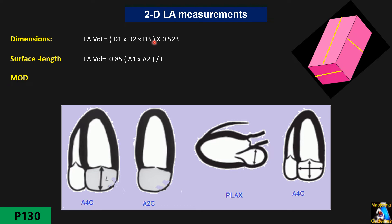The machine calculates the volume for us using the appropriate equation, or we can calculate it ourselves. For the surface-length technique, we go to apical four and two-chamber views and trace the left atrium at end-systole in both views, then measure the LA length. The machine calculates the volume using this equation. The third technique is the method of disks, or modified Simpson, where the machine traces and divides the LA into equal disks to give us the volume.